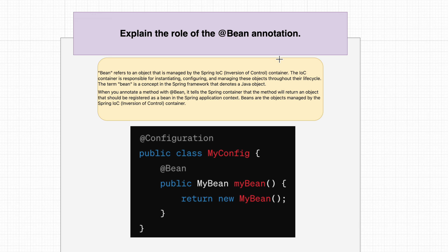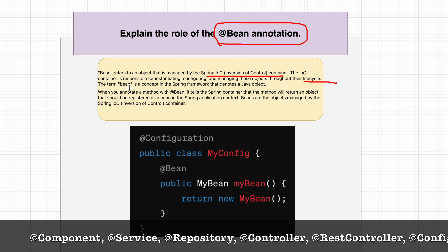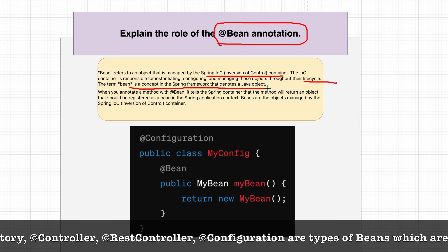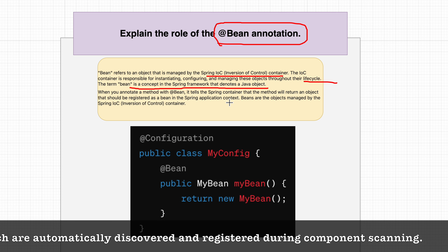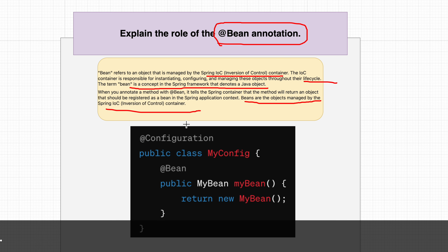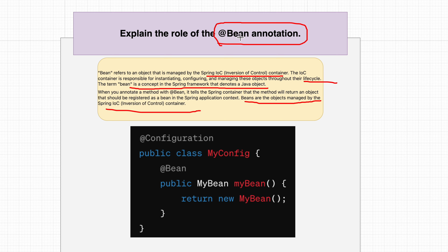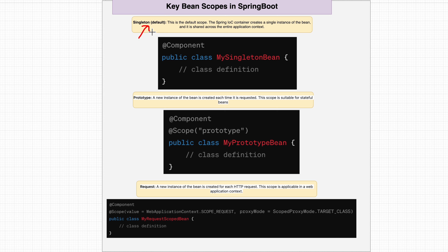The IoC container manages objects annotated with @Bean. A bean refers to an object managed by the Spring IoC container, which is responsible for instantiating, configuring, and managing these objects throughout their lifecycle. When you annotate a method with @Bean, it tells the Spring container that the method will return an object that should be registered as a bean in the Spring application context.